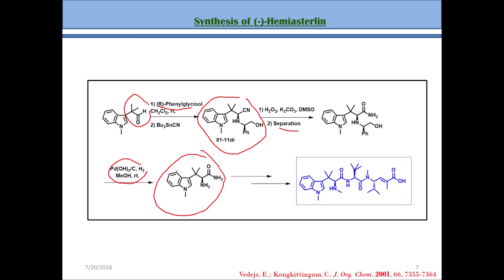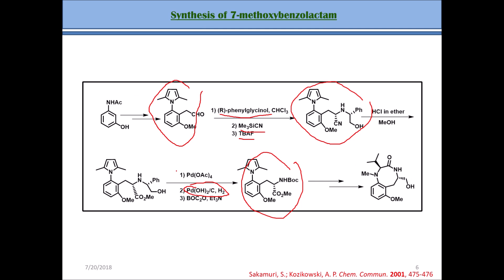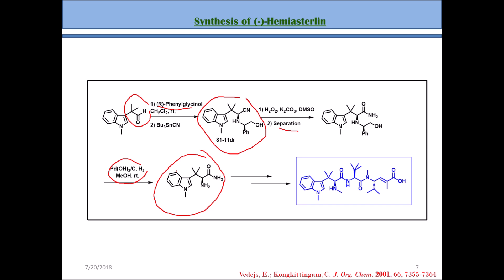So that's all about the Strecker reaction and how you can use it in an asymmetric method, which is more relevant at the advanced level. Remember: whenever you use R-phenylglycinol, one diastereomer will dominate over the other and you can get whichever product you want. I hope you found this video useful — if you did, please like it, give it a thumbs up, and share it with your friends. Thank you so much for watching.